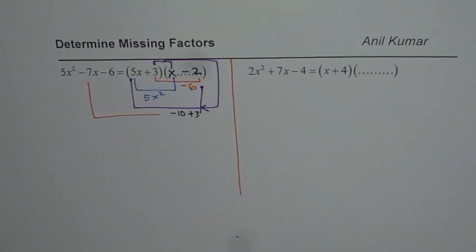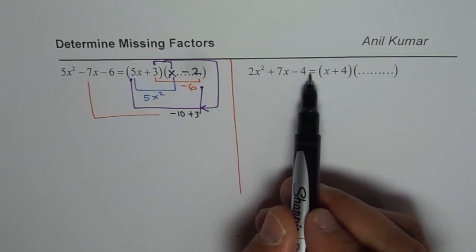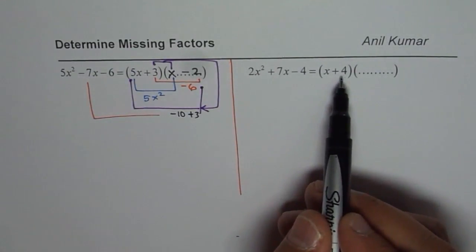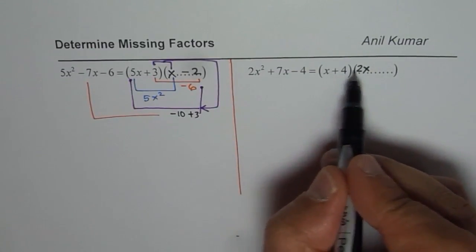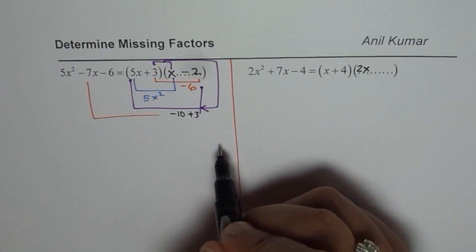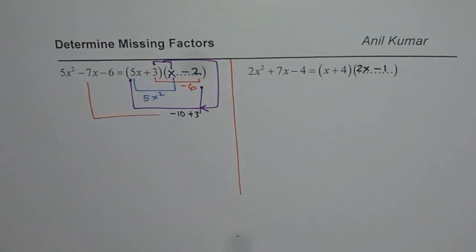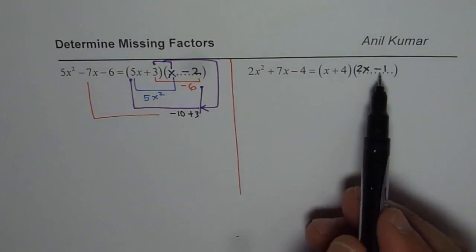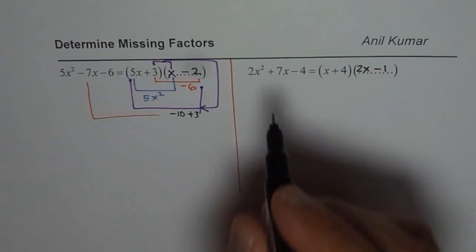Let us apply this strategy once again. We have 2x squared plus 7x minus 4. So this term should be 2x. So this term should be 2x. x times 2x is 2x squared. 4 times what is minus 4? It is minus 1. Do you get the idea? So that is how you can get the missing factor very fast. You can actually factor and check.